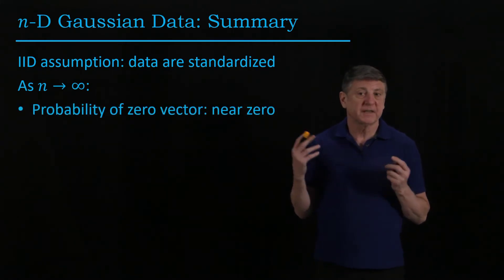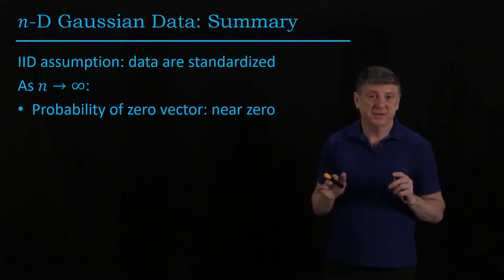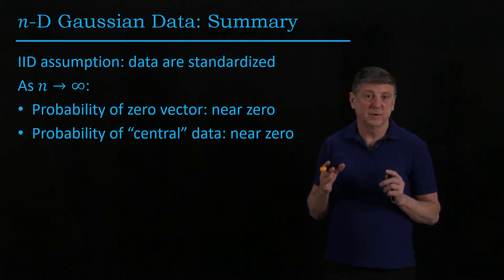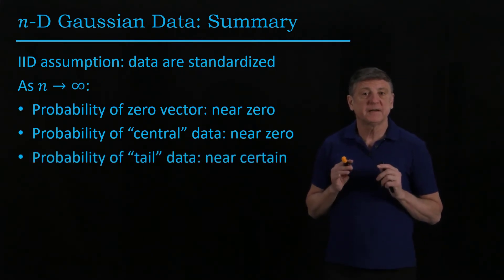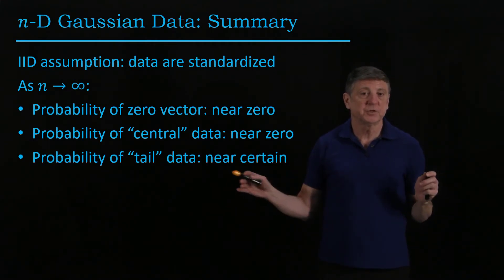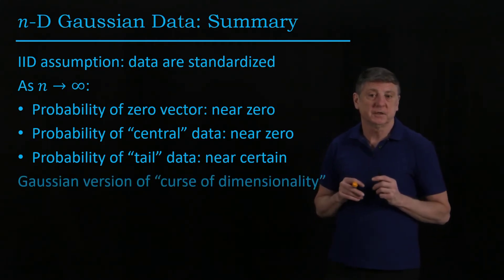the probability of finding the zero vector is vanishingly small. The probability of finding central data, things within an alpha of one-half, vanishingly small. The probability of finding our data in the tails of the distribution, it approaches certainty. And this we can summarize as the Gaussian version of the curse of dimensionality.